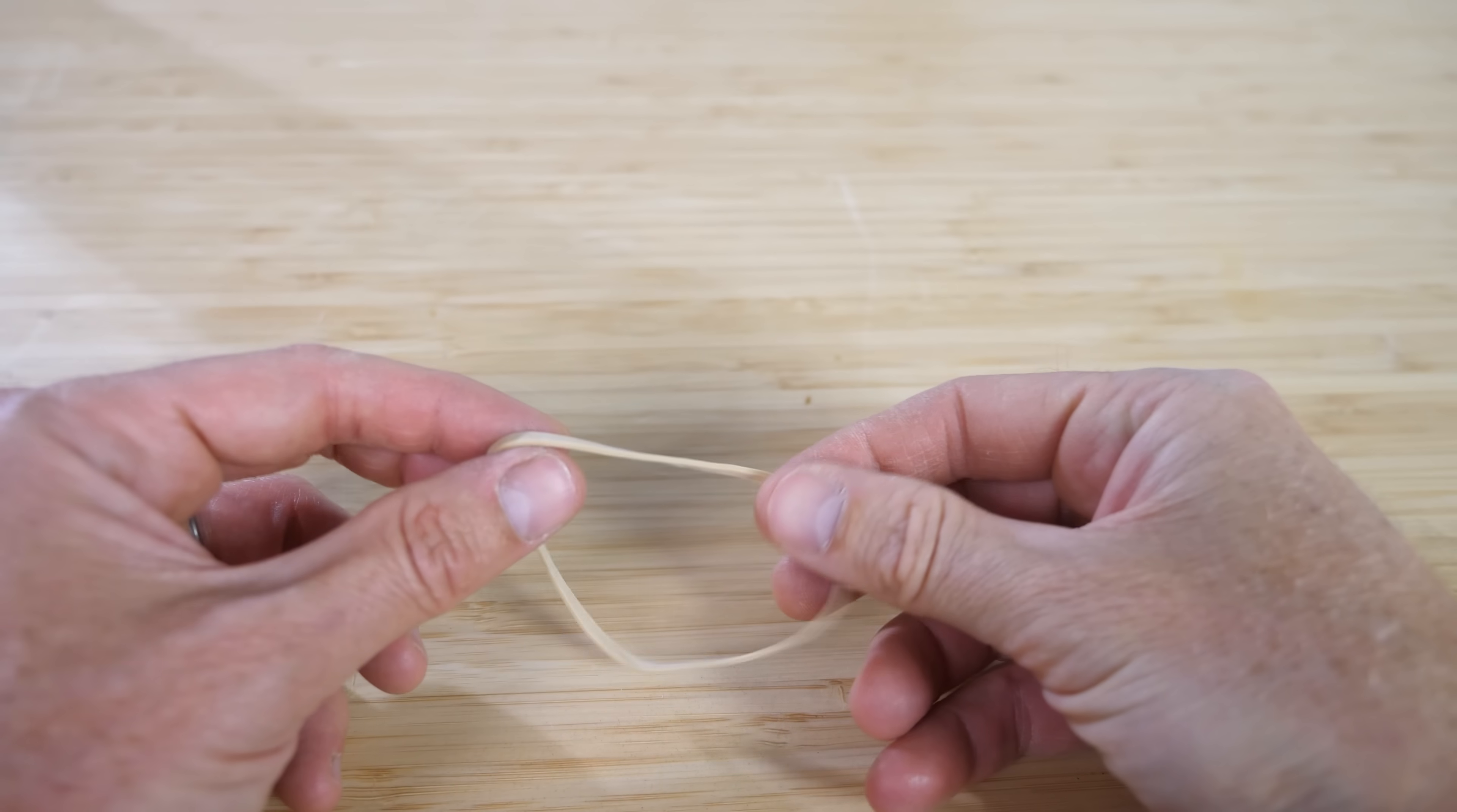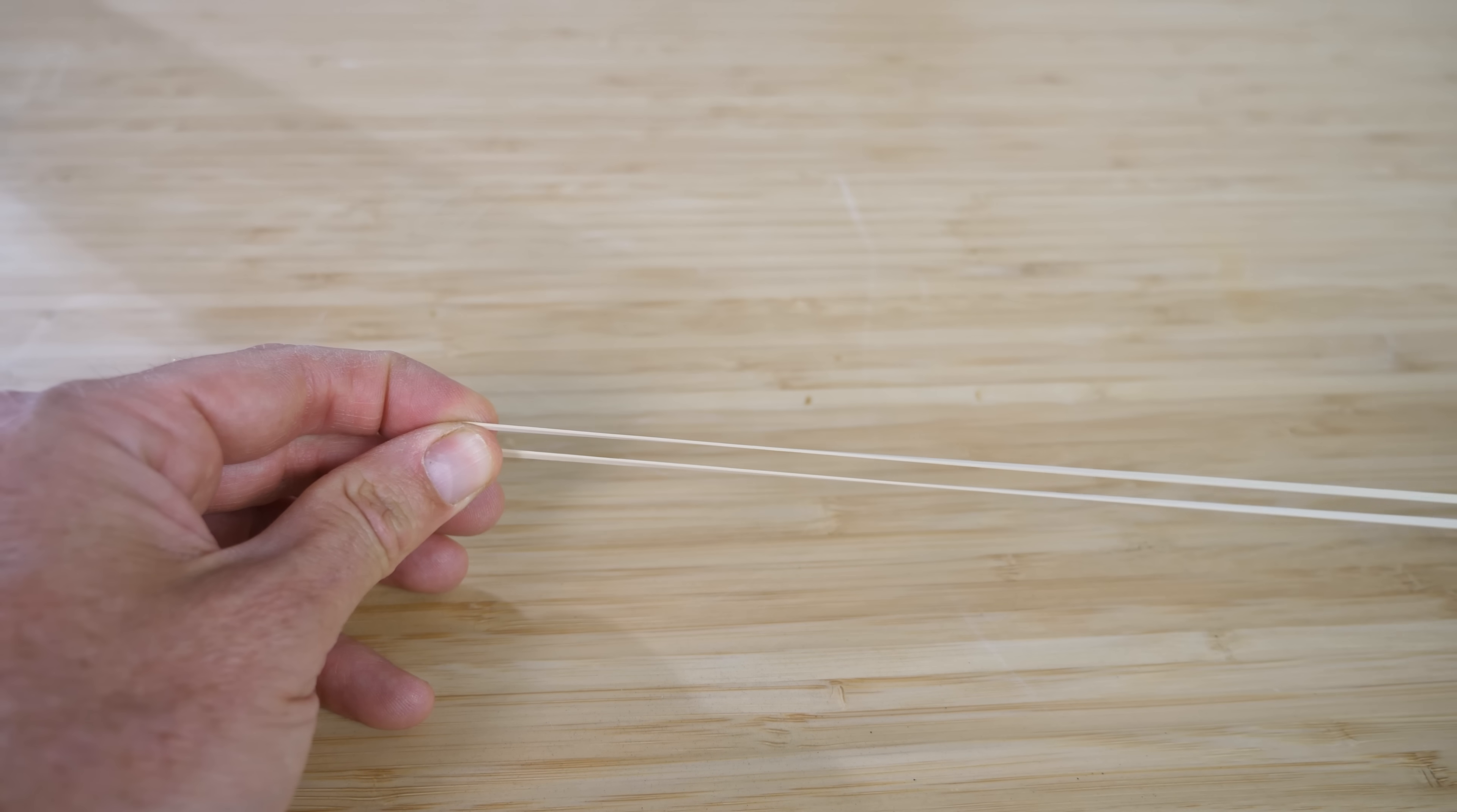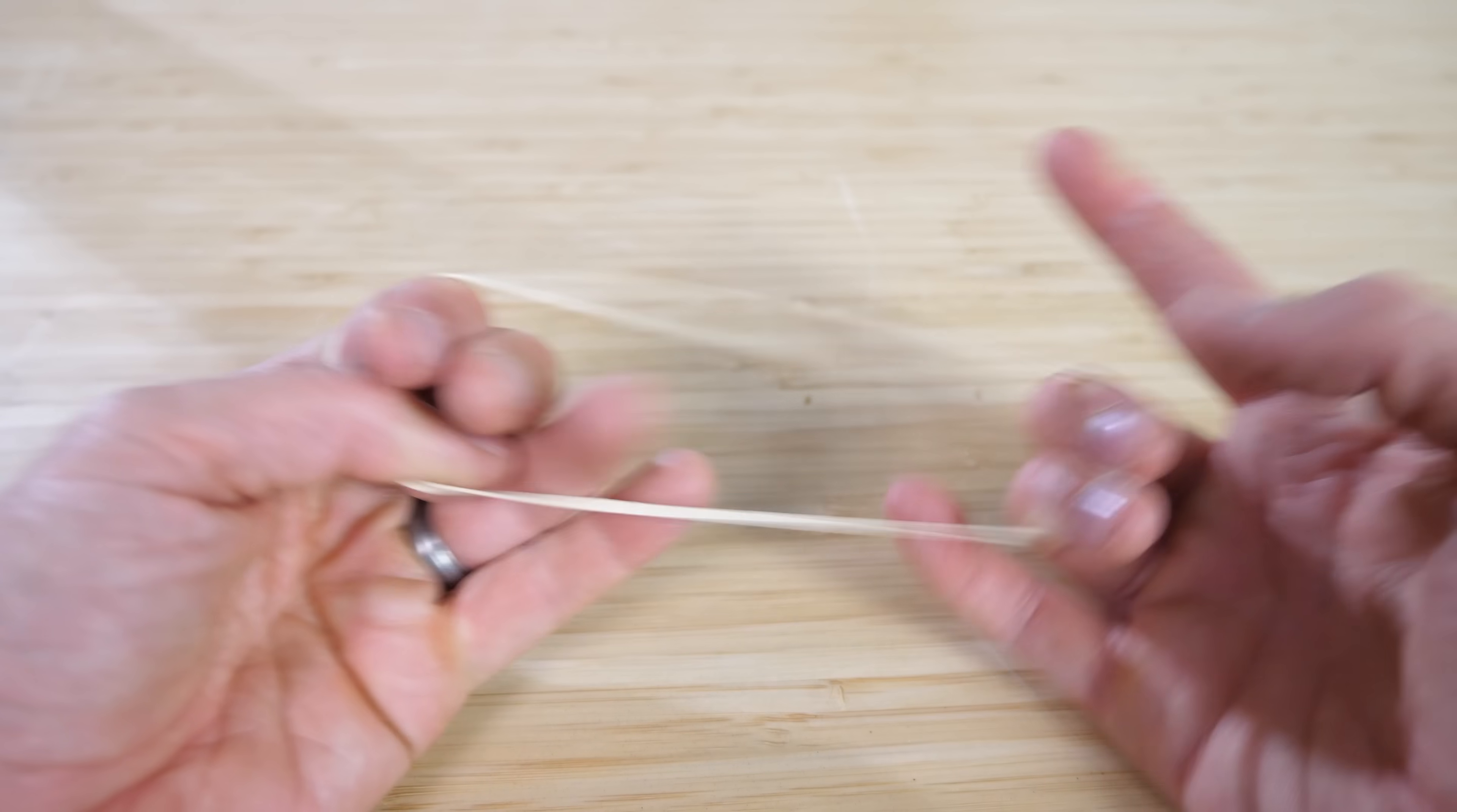This is the same thing that's happening in a rubber band. There are these long polymer molecules that are coiled right now. But when I pull on the rubber band, it straightens them. It takes force to do this. And if I let it go, it springs back purely from the entropic force.